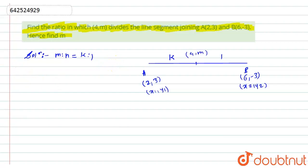Now, by using the section formula, I can find the coordinates of (4,m). So, the formula says that (x,y) is equal to (mx2 + nx1)/(m + n). Similarly, for the y coordinate, (my2 + ny1)/(m + n).